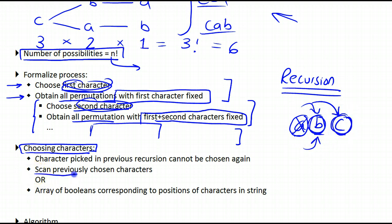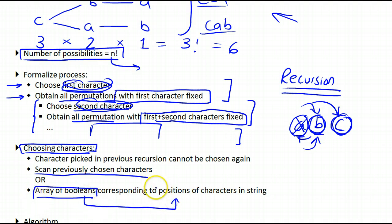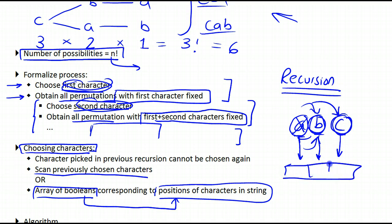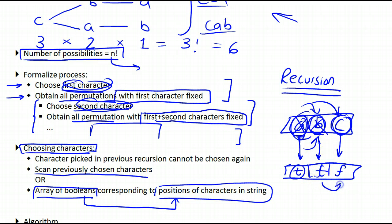We could do that either by scanning previously chosen characters, or — a more efficient way — by having an array of booleans, where each boolean corresponds to one position in the characters of the string. So if the string is ABC, each cell corresponds to one character. Once we pick a character, we mark it as true, meaning we can no longer pick it. The others remain false, meaning they haven't been picked yet. The moment we pick another one, we mark it true and move on in our recursion.